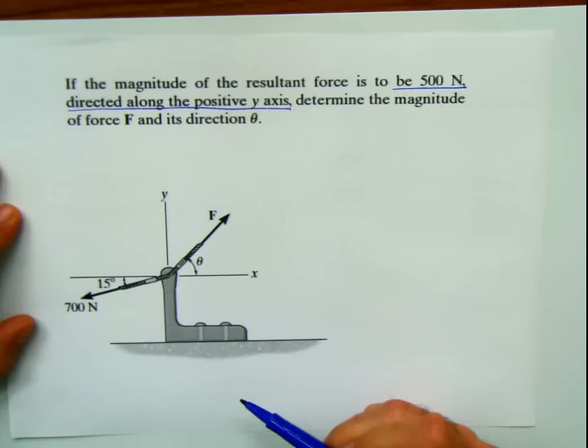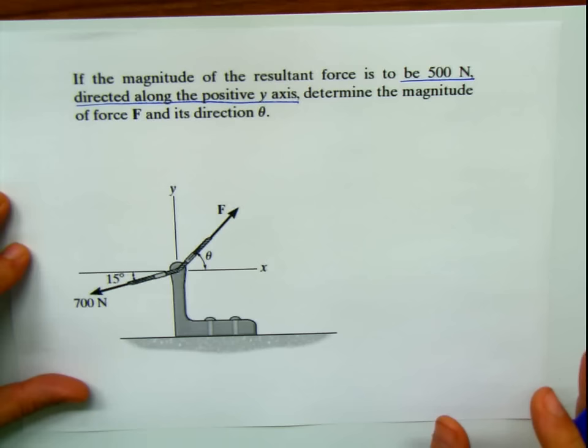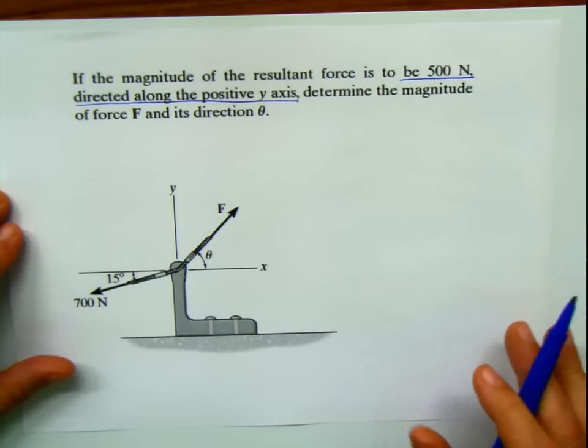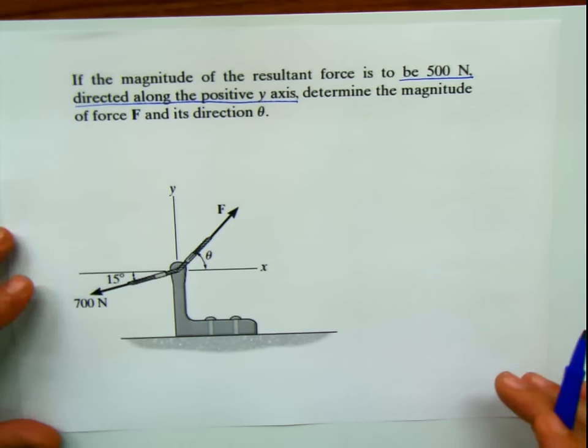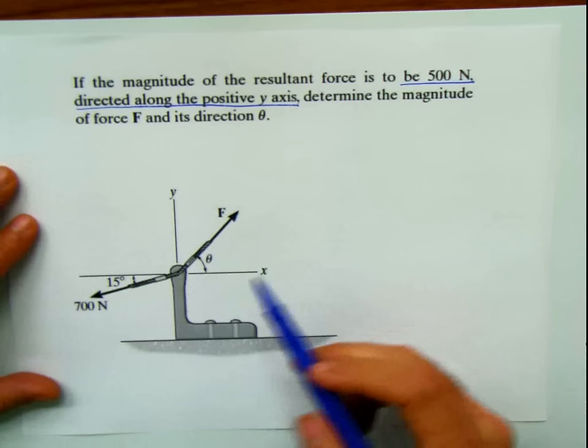This problem, the way it's stated, can be done in two ways. The first way, you can do it by using trigonometry — using the law of sines and cosines. And this is the first approach that we are going to do. So basically, we're going to apply the parallelogram law.